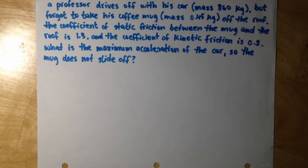In this problem they gave us two coefficients of friction and we have to choose which one we want to use. We want to use the coefficient of static friction because that is the friction between two objects that are not moving, and we want to figure out the maximum acceleration of the car so that the mug does not move or slide off the roof.